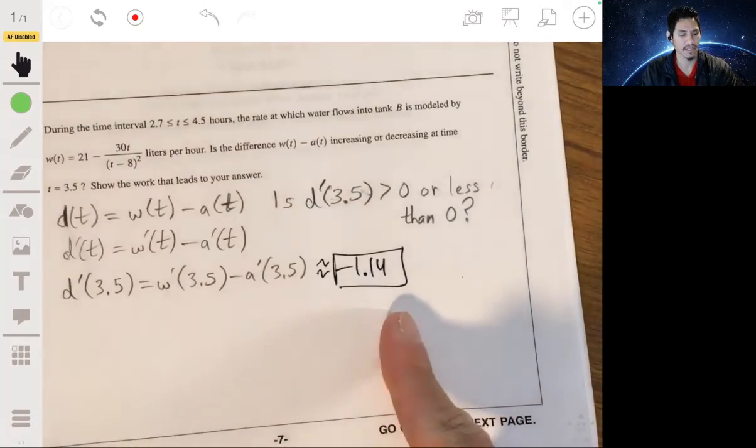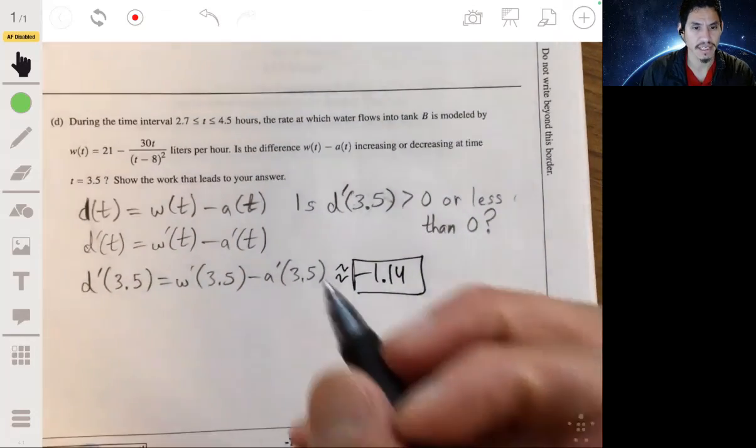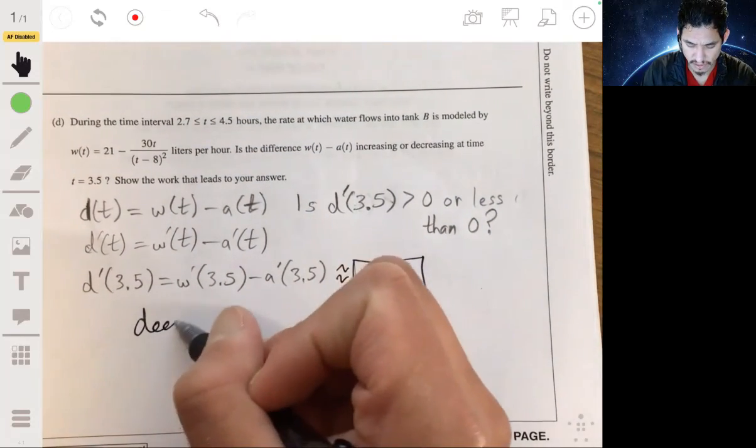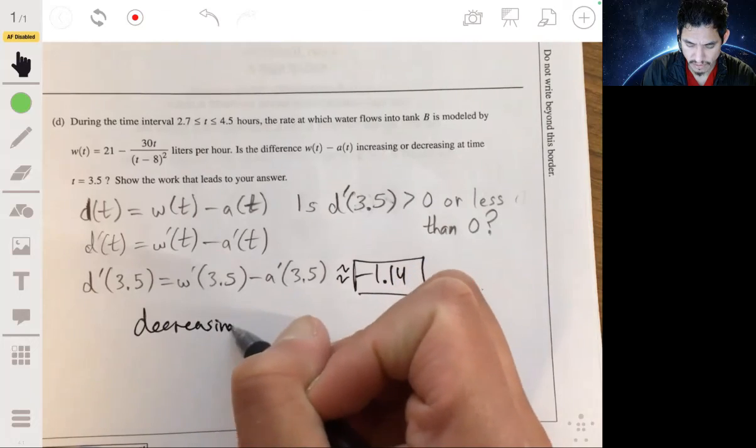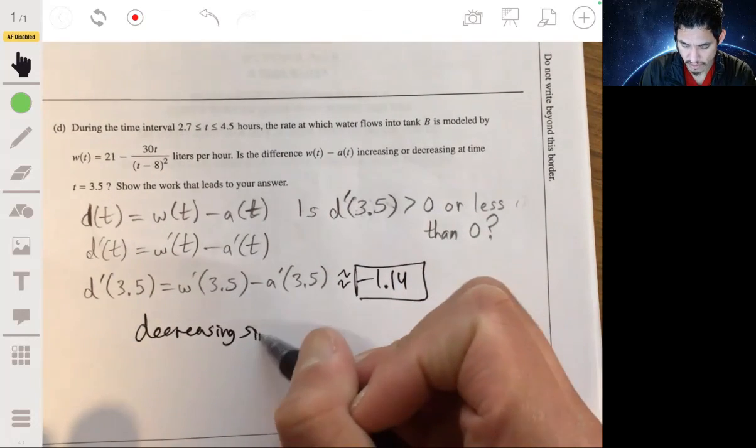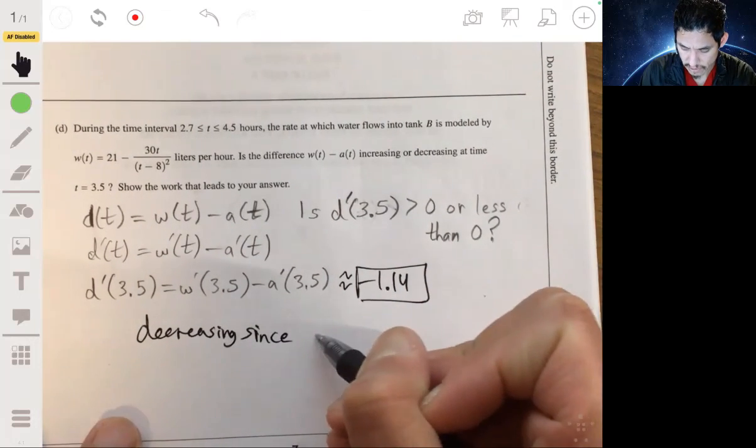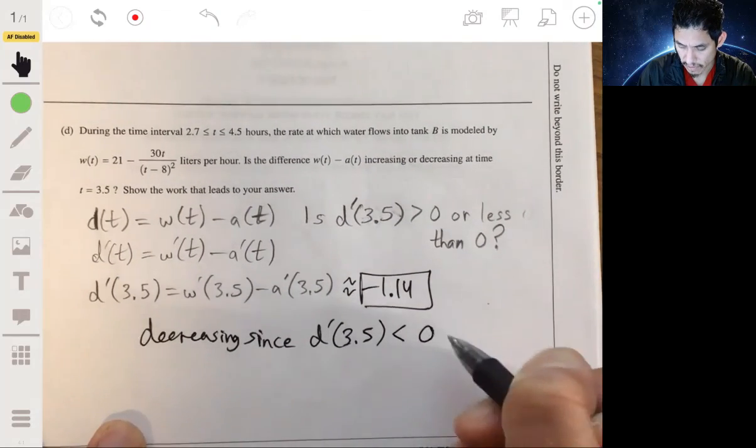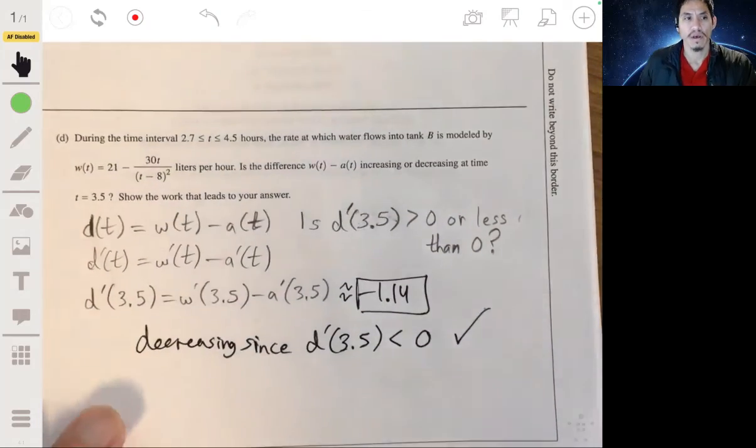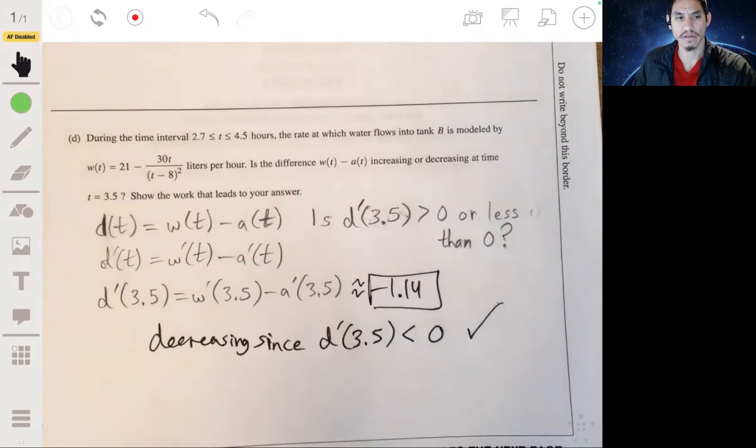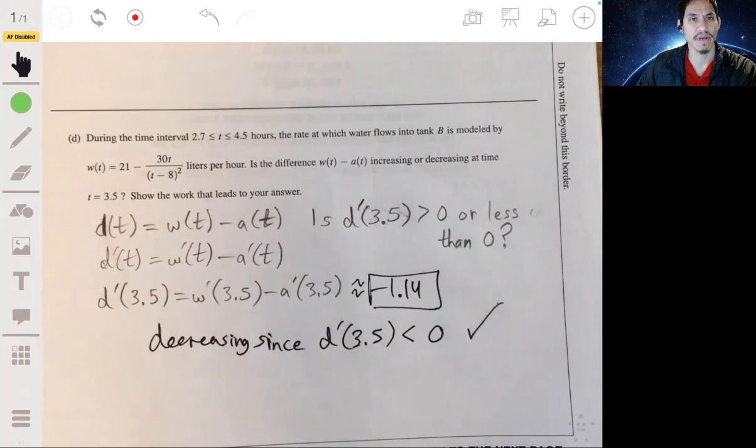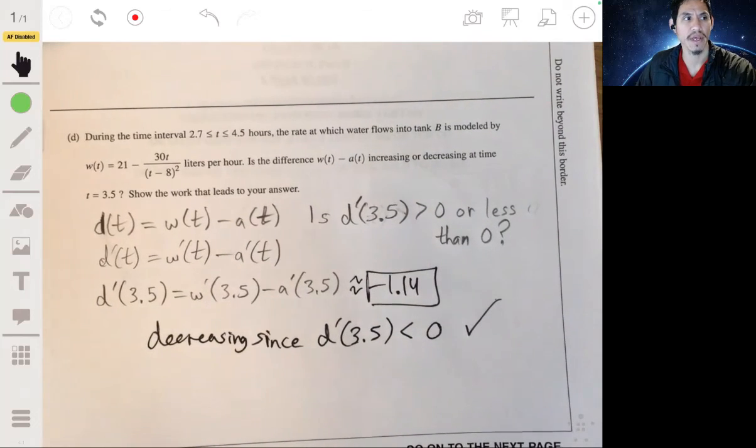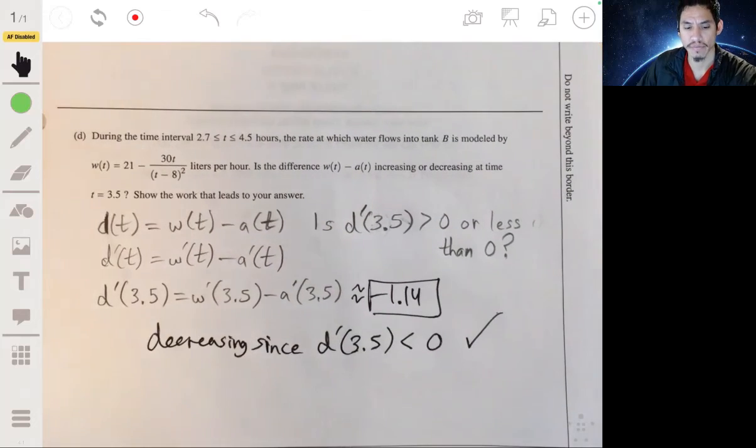So since this is negative, it's going to be decreasing, decreasing since D prime of 3.5 is less than zero. That was a long one. So I hope that helps. But give me any feedback, any questions, and I'll do my best to get back to you. Good luck.